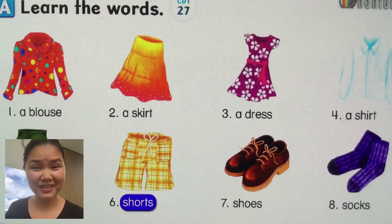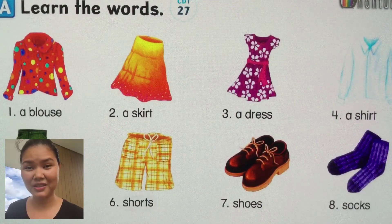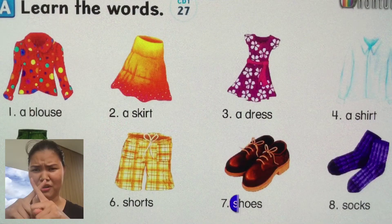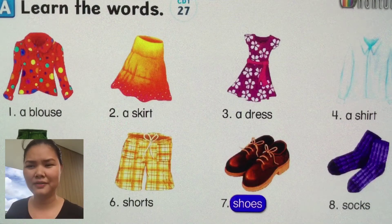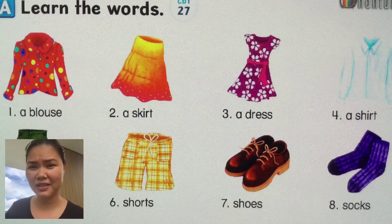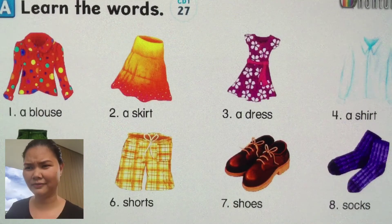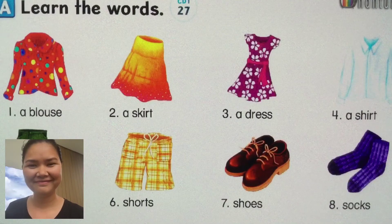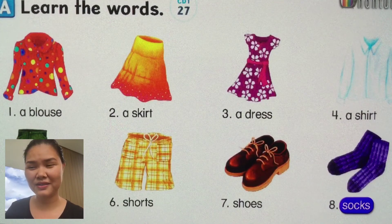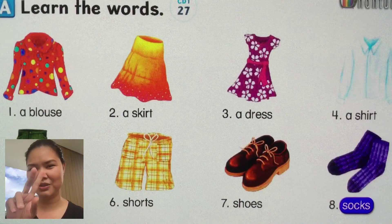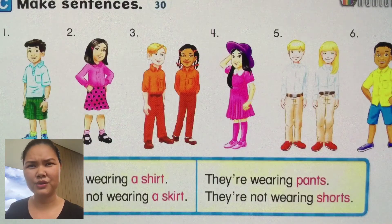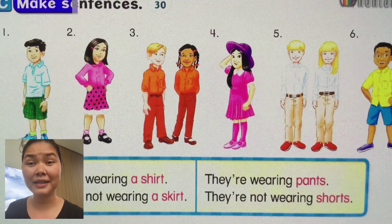Number five is pants. Number six: shorts. Yes, that's shorts. You don't say 'a shorts' — you say 'shorts', not 'a shorts'. Like shoes, you say shoes. Number eight is socks. Those are two pieces — one pair of socks.